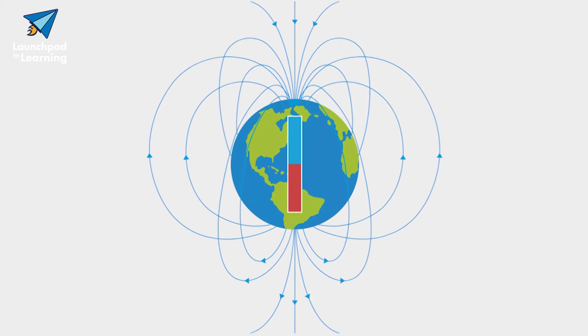This magnetic field is super useful, especially for something like exploring. A compass like this one here works because the needle is also a magnet. The needle is attracted to the earth's magnetic poles.